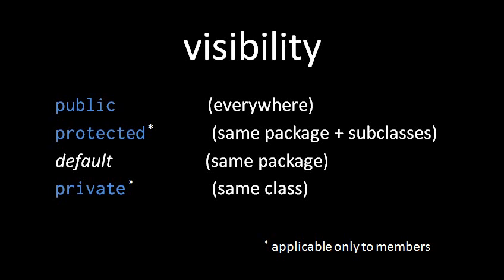The easiest to understand visibility level is public, because when something is public, it's visible everywhere — there's no restriction. In contrast, private visibility is the most restrictive; when a field or method is private, it's only visible within its own class. By far, public and private are the visibility levels you're going to use most often. 99% of the time, the only question to ask yourself is should this be public or should it be private? And the general guideline is that if you can't think of a reason for something to be public, leave it private.